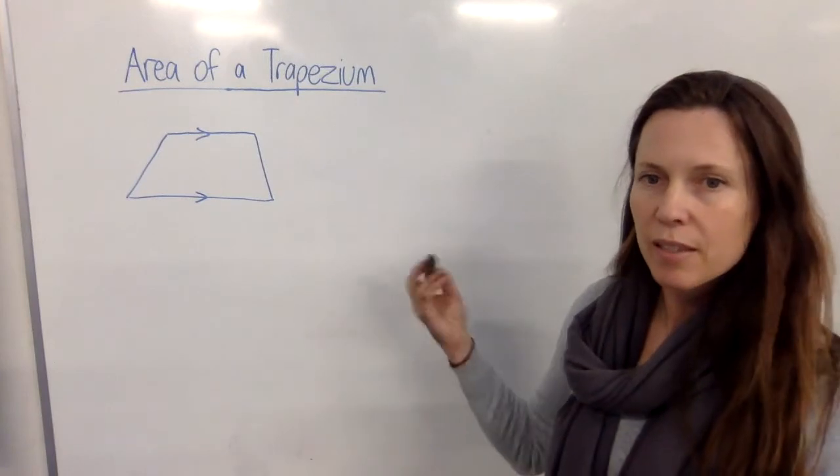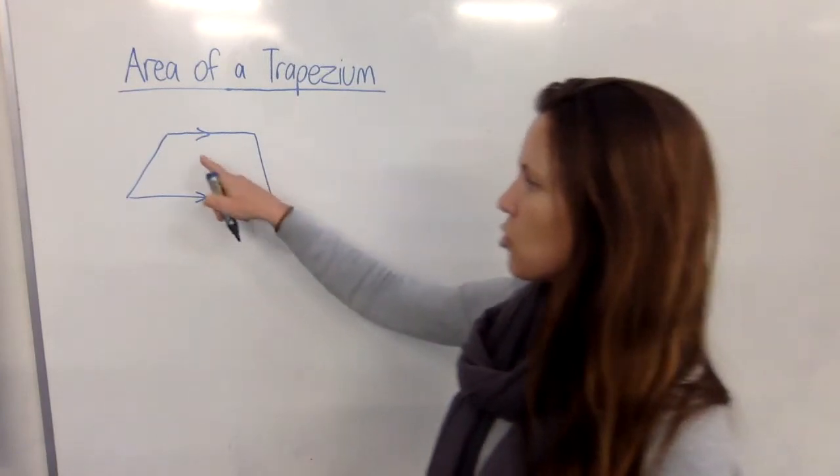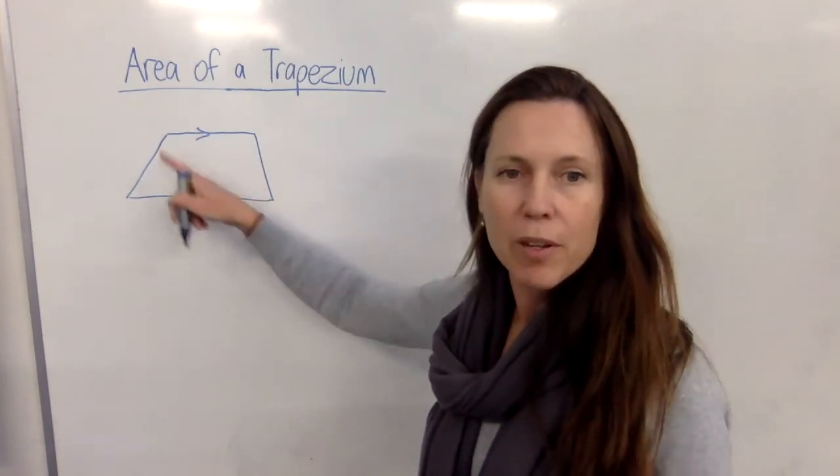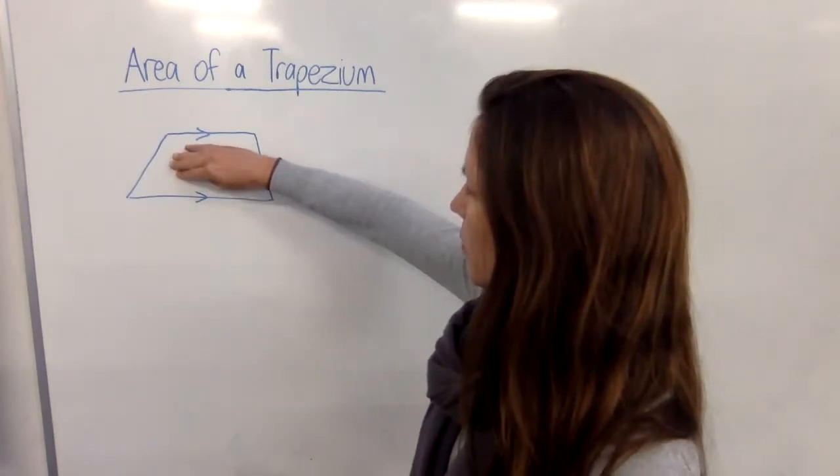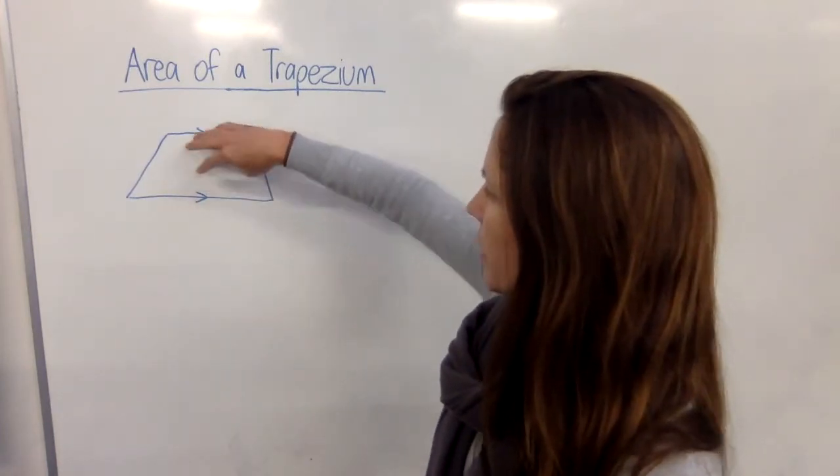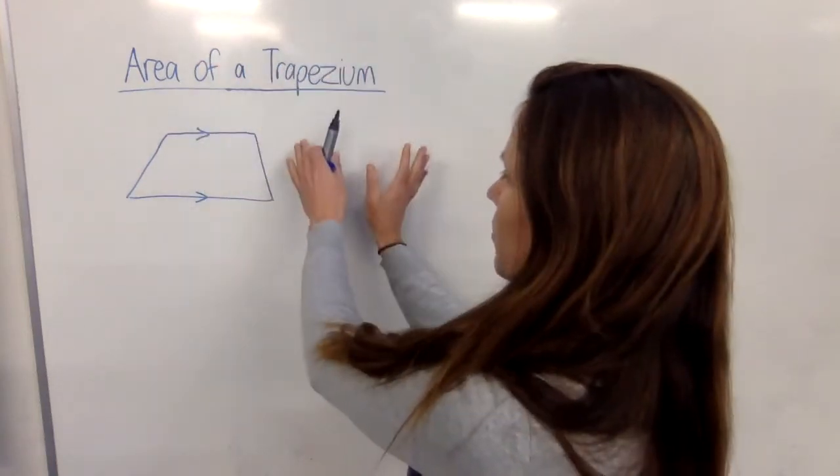Now the easiest way to understand this is if I was to duplicate this trapezium, in other words if I was to cut it out but cut out two of them, then I could take one of them and I could actually place it around, turn it around upside down like this.